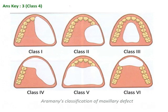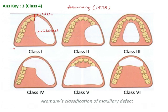This classification was given by Aramani in the year 1978. Mohammed Aramani gave this classification with six categories in total. Class 1 is a unilateral defect extending just up to the midline, including any one quadrant.